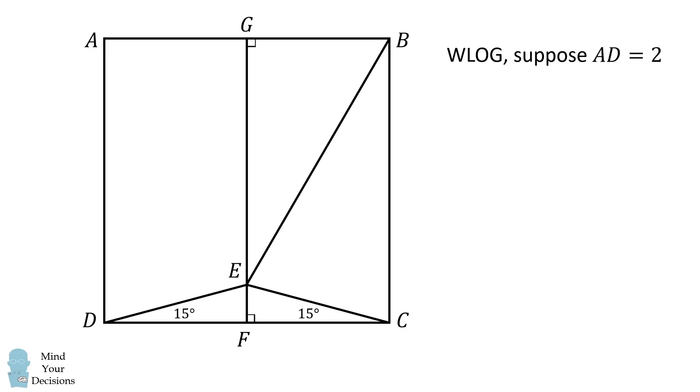Without loss of generality, suppose the square has a side length equal to 2. Then, FC will be equal to 1, and GB will also be equal to 1.